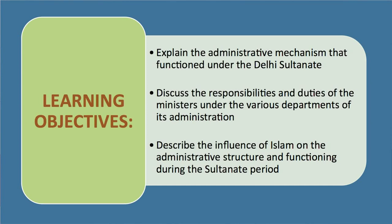The first objective is to explain the administrative mechanism that functioned under the Delhi Sultanate. Secondly, to discuss the responsibilities and duties of the ministers under the various departments of its administration. And thirdly, to describe the influence of Islam on the administrative structure and functioning during the Sultanate period.